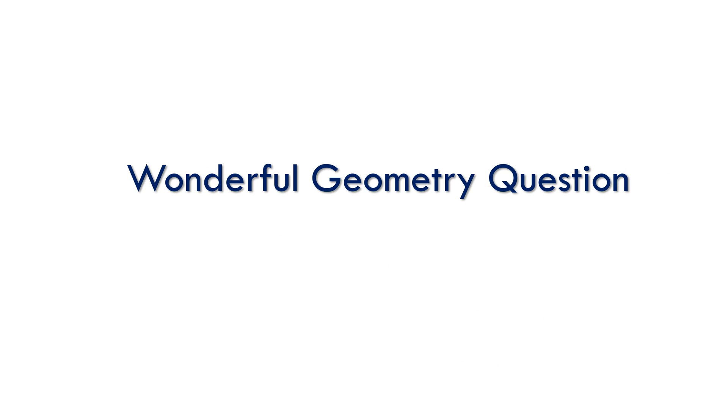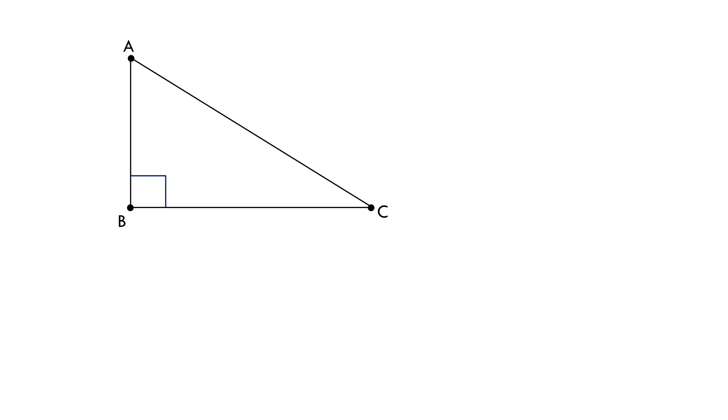Hi, if you're interested in geometry, you'll be really interested in this wonderful problem. Here ABC is a right-angle triangle. AMB is a semicircle on diameter AB. BNC is a semicircle on diameter BC.